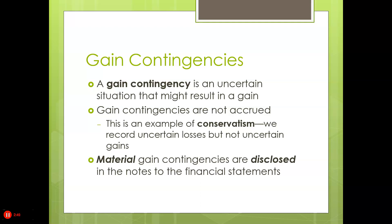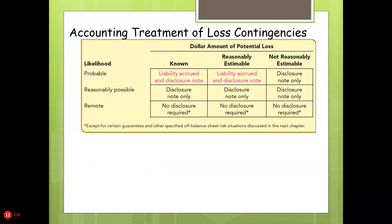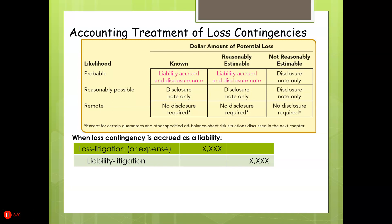Let's take a look at loss contingencies. The rule again is: if it's probable, known, and can be reasonably estimated, we're going to do a journal entry and disclose it. If it's reasonably possible, known, and reasonably estimated, we would have to put a footnote. And if it's remote, we do nothing. When a loss contingency is accrued, it would be loss litigation, which is an expense, and liability litigation, which would be a liability.